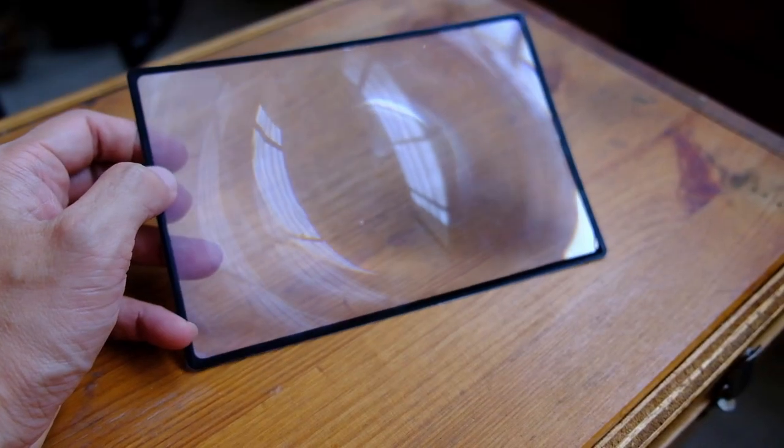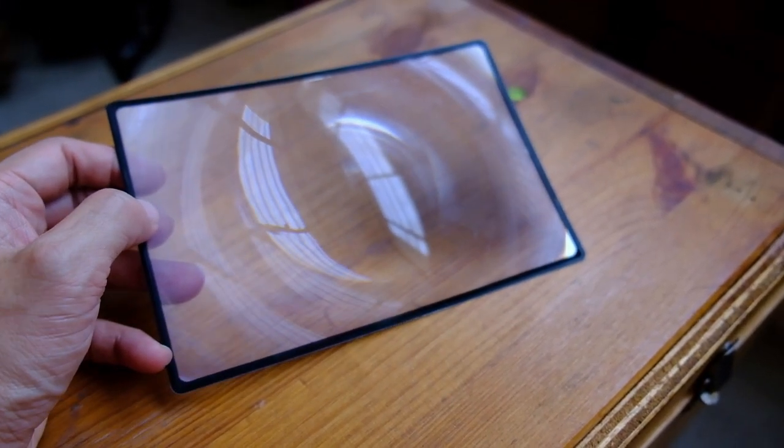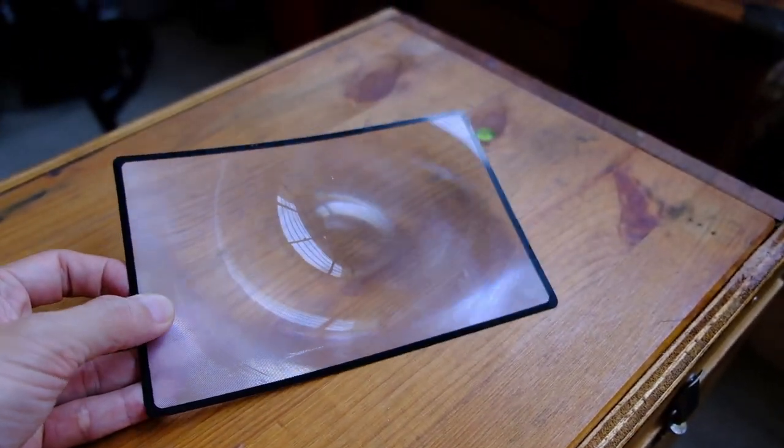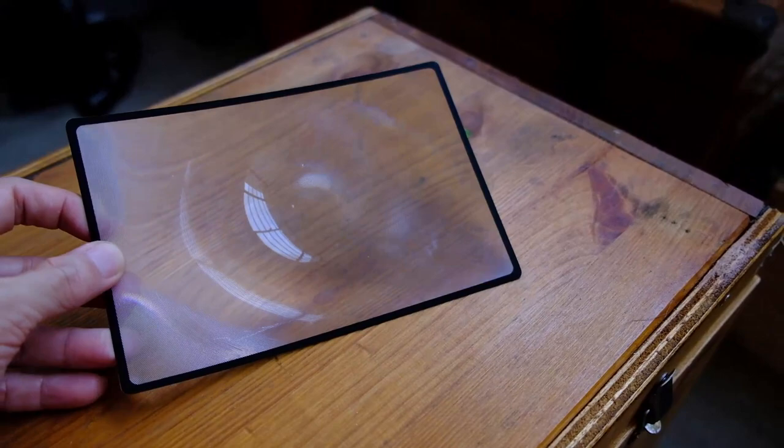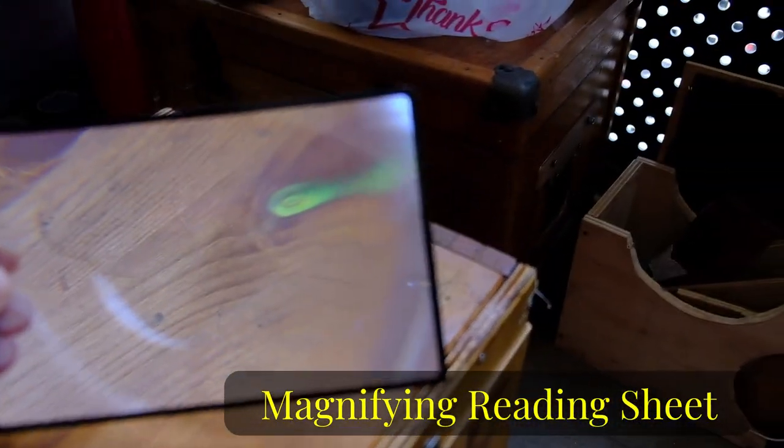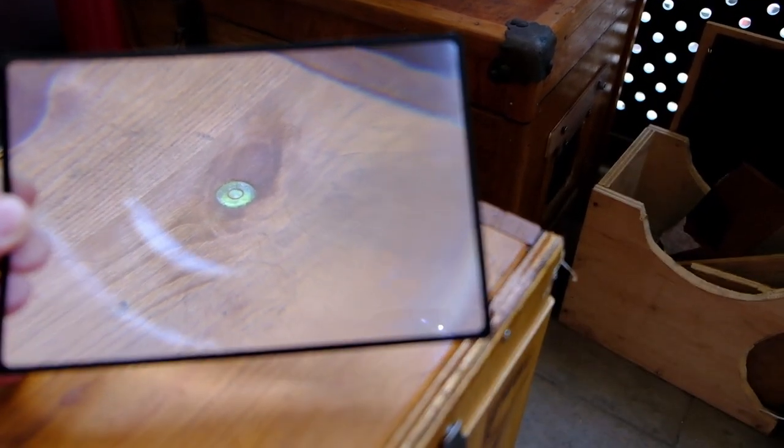So the last thing that I add to my box camera is this, what we call a Fresnel lens. This is actually a magnifying sheet that I got off the China marketplace Taobao.